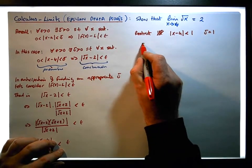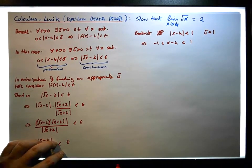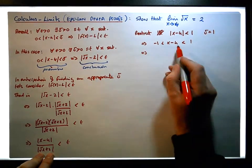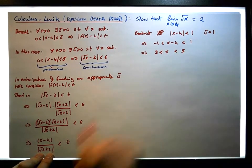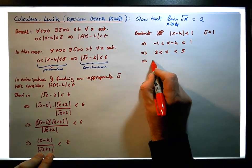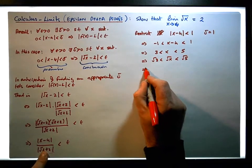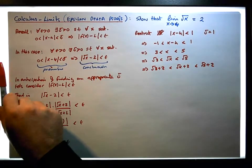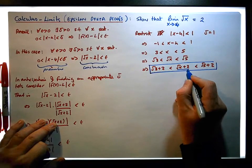This implies that minus 1 is less than x minus 4, which is less than 1. We want to see what's happening to the square root of x plus 2. Adding 4 across, this implies that 3 is less than x, which is less than 5. Taking square roots, the square root of 3 is less than the square root of x, which is less than the square root of 5. Adding 2 throughout, the square root of 3 plus 2 is less than the square root of x plus 2, which is less than the square root of 5 plus 2. So we've bounded this quantity below and above.